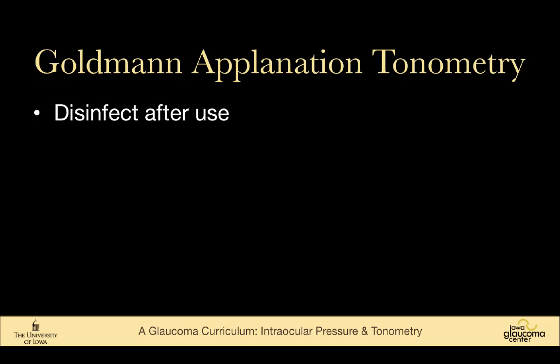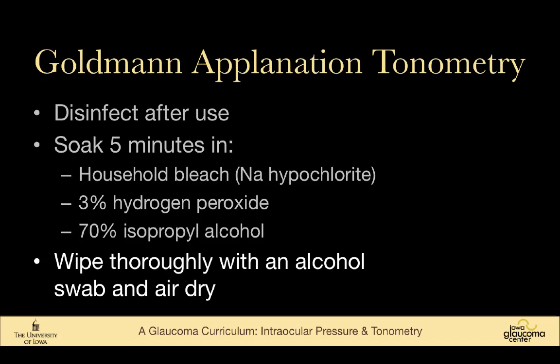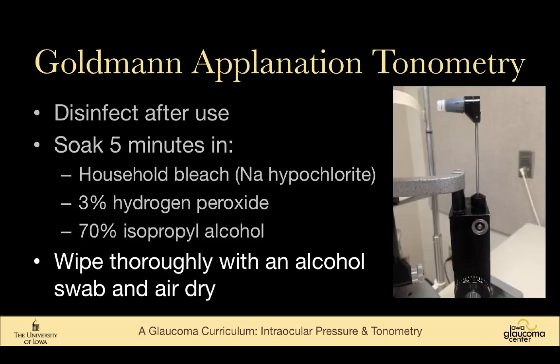Whenever we use any tonometer, we need to disinfect it. Devices like tono pen and iCare have disposable parts in contact with the patient, but the Goldman does not. So you can soak it in household bleach, sodium hypochlorite, hydrogen peroxide, or isopropyl alcohol. You can also wipe it thoroughly with an alcohol swab and air dry it. In our clinic, the custom is to turn the tonometer tip backward after cleaning so the next person knows it's clean.